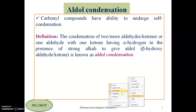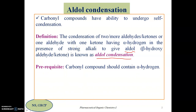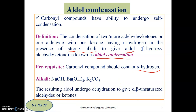The product formed is called aldol, which is a beta hydroxy aldehyde or beta hydroxy ketone. The prerequisite for aldol condensation is that the carbonyl compound must have alpha hydrogen. The reaction occurs in the presence of alkalis such as sodium hydroxide, barium hydroxide, or potassium carbonate.